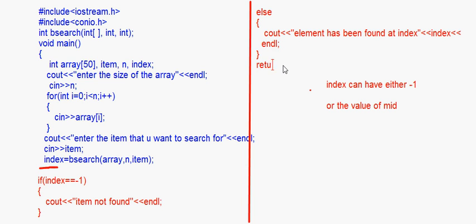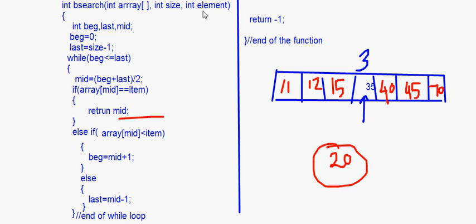One correction: in the function signature I had written 'int element' but used 'item' in the comparisons — array[mid] == item, array[mid] < item. So I'll change 'element' to 'item' to be consistent throughout.